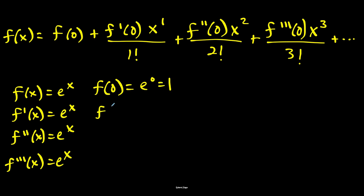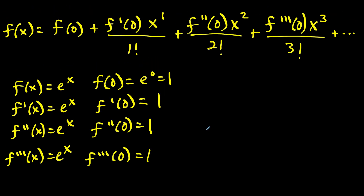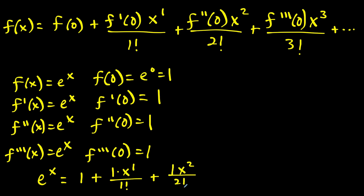And notice for the rest of them, f prime of zero is also e to the zero, which is equal to one. This is going to be true for our second derivative and also true for our third derivative. So now we plug in the coefficients we found into the next line. We can name f of x as e to the x. So e to the x equals one — f of zero is one — plus one times x to the first over one factorial, plus one times x squared over two factorial, plus one times x to the third over three factorial. And this pattern continues.